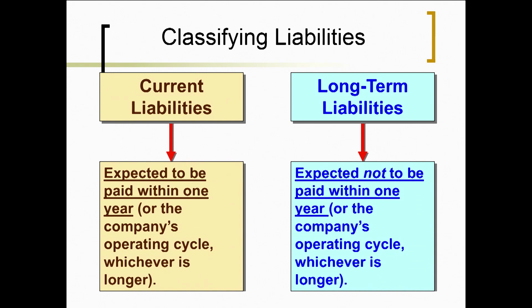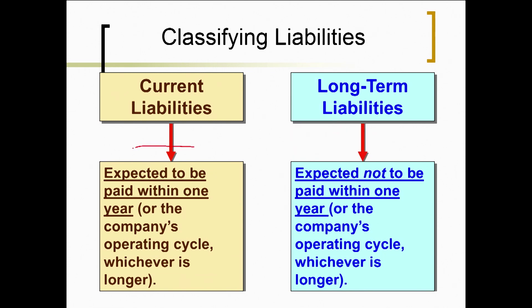Let's focus on current versus long-term liabilities. Current liabilities are those that are expected to be paid within a year. Long-term or non-current liabilities are not expected to be paid within the next year. That's pretty simple — is it due within the next 12 months? If it is, it's a current liability. If it's not, it's a long-term or non-current liability.